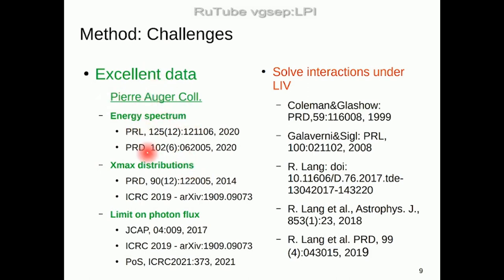The two main challenges of this method: first and most important, to have excellent data. I won't have time to explain the beauty of all the data collected in the last two decades by the Pierre Auger Observatory — we are going to use the energy spectrum, the Xmax distribution, and the limit on photon flux. I ask you to read these papers to enjoy the beauty of the data.